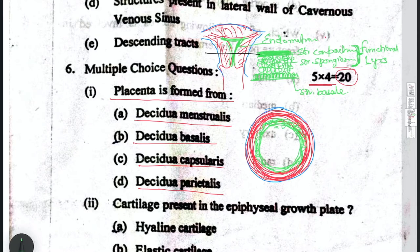The HCG hormone after fertilization starts being secreted by syncytiotrophoblasts. Under the influence of HCG and maternal progesterone, the endometrium becomes thick and glandular, with more proliferation of blood vessels. This secretive phase is enhanced after implantation.